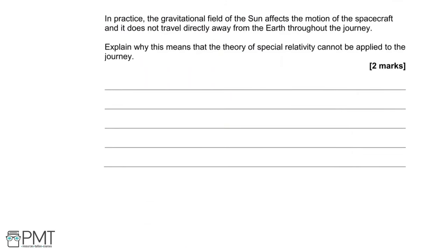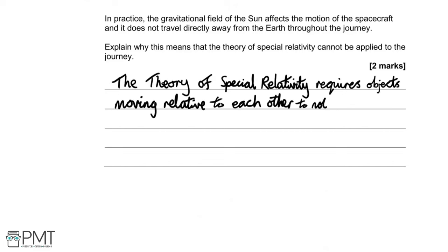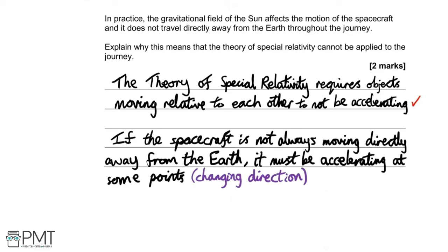Special relativity cannot be applied because it requires objects to travel at constant speed without acceleration. Since the spacecraft is affected by the sun's gravity and does not travel directly away from Earth throughout the journey, it won't always move in a straight line and must be accelerating at points. Changing direction — even at constant speed — counts as acceleration. Two marks.